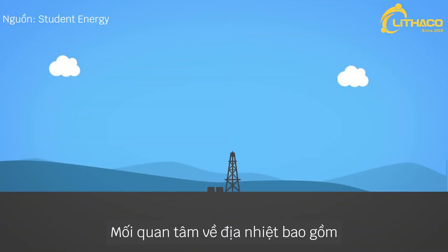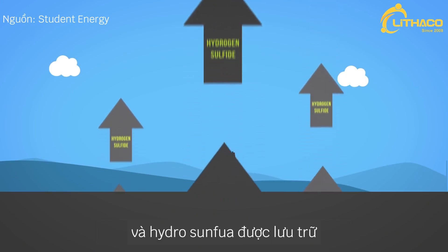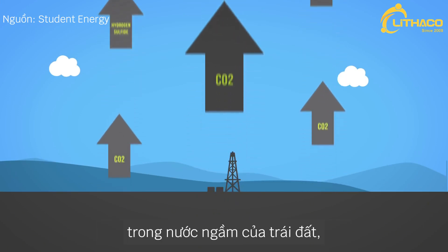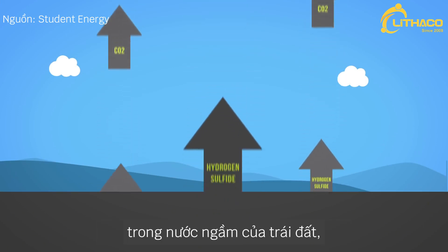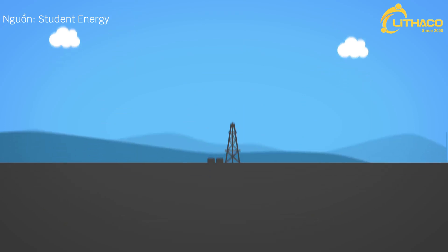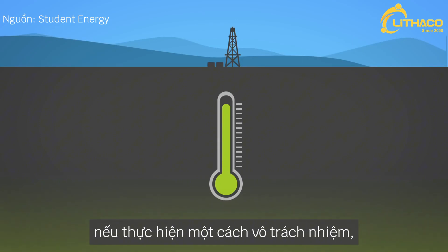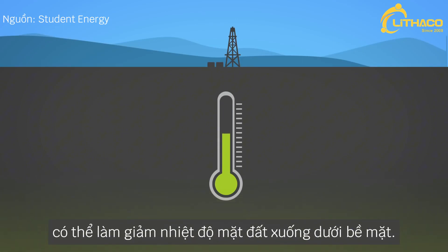Concerns with geothermal include the accidental release of CO2 and hydrogen sulfide emissions stored in the Earth's groundwater that is often used to carry geothermal heat to the Earth's surface. Additionally, drawing heat from the Earth's crust can, if done irresponsibly, lower the ground temperature below the surface.